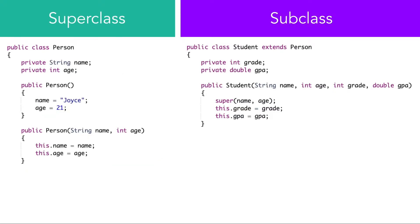We've created a subclass Student that extends the superclass Person. Because the Student class extends the Person class, it has access to its instance variables name and age, which is why we don't need to rewrite those. Rather, we need to write only the ones that are specific or unique to the Student class — in this case, grade and GPA.